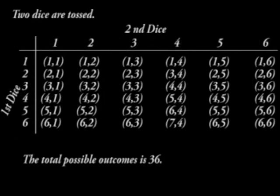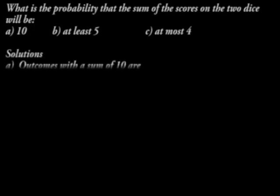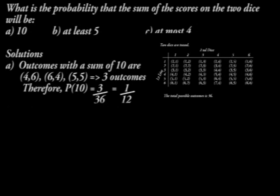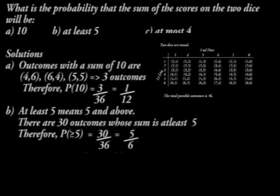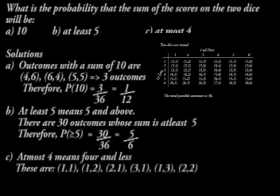For example, when two dice are tossed, the following outcomes are expected. What is the probability that the sum of the scores on the two dice will be 10, at least 5, or at most 4? Outcomes with a sum of 10 are 3 in total, so the probability is 3/36 = 1/12. At least 5 means 5 and above; there are 30 such outcomes, so the probability is 30/36 = 5/6. At most 4 means 4 and less; the probability of getting at most 4 is 1/6.